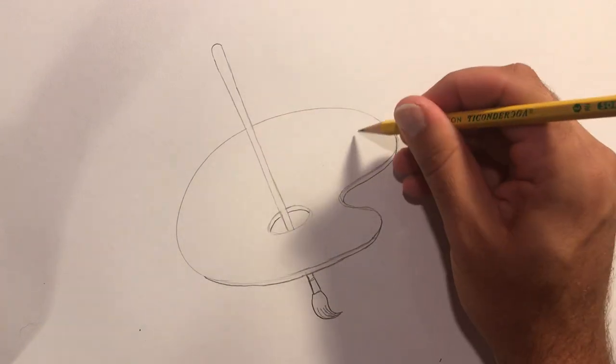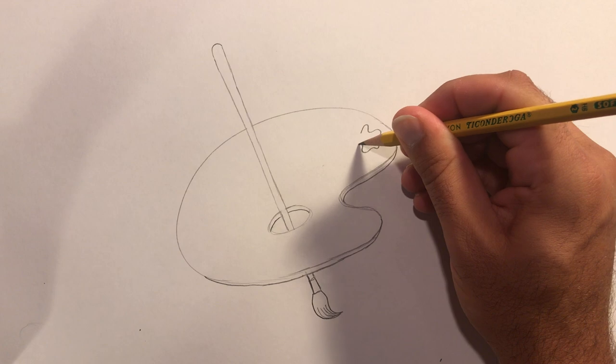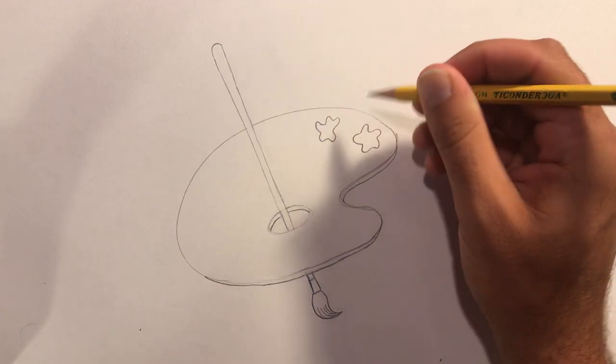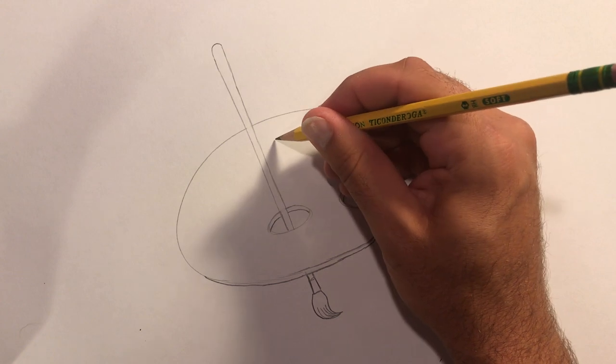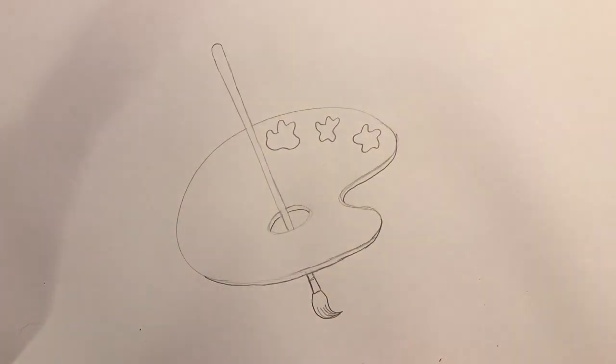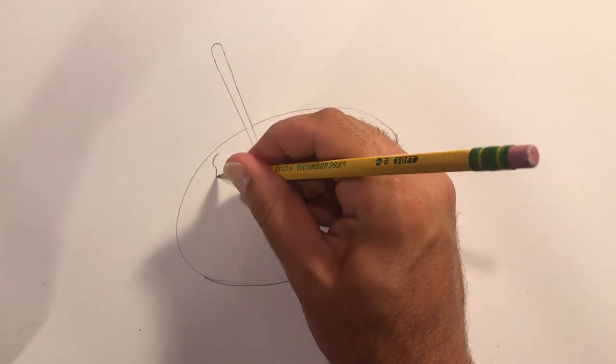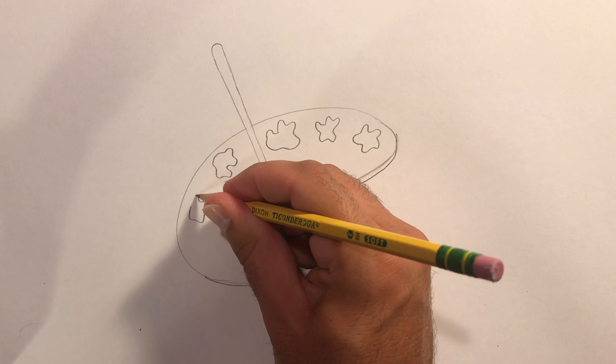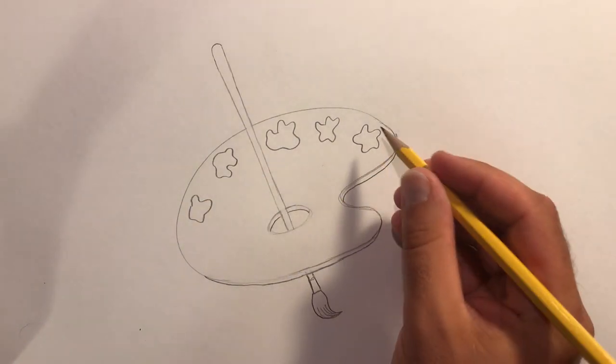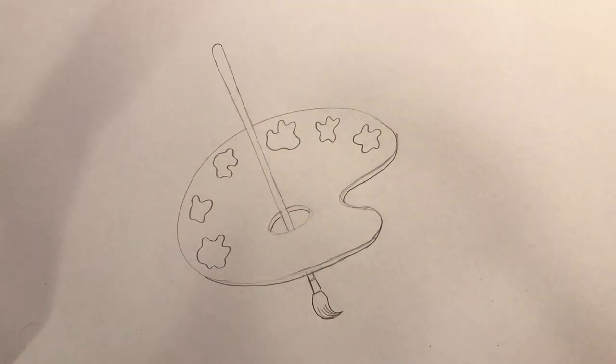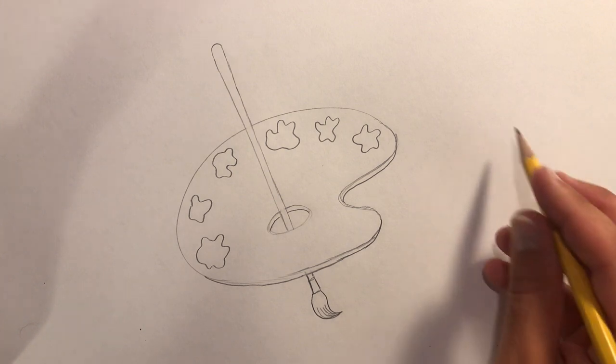All right, now we're going to give it the colors across the top here. Make kind of just uneven blobs of paint and put three up here and then three on this side. And these are what we'll add color to later. Cool.